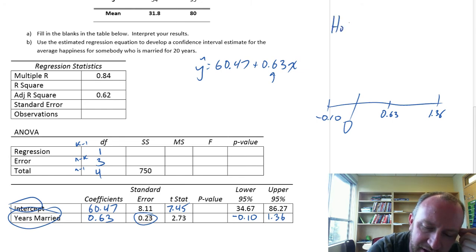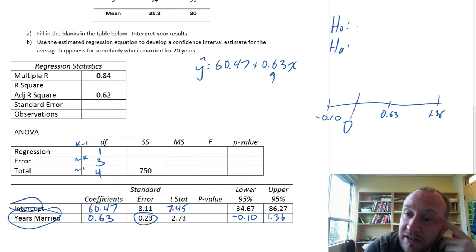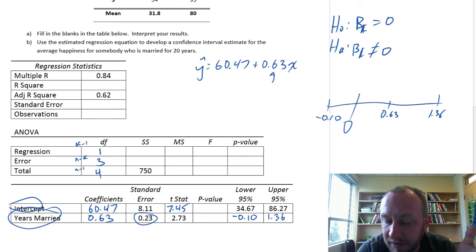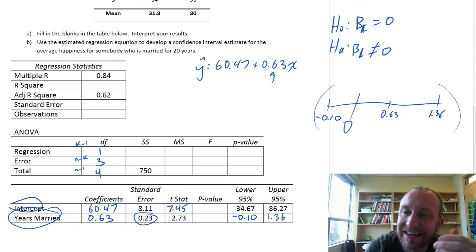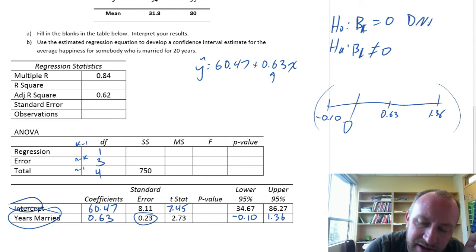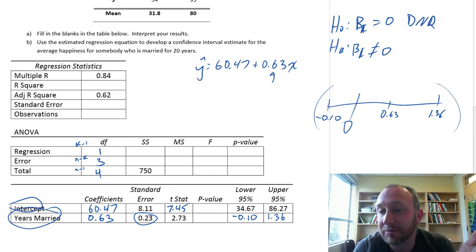So what does that mean for our hypothesis test? If we develop these tests for individual parameter significance: beta i is equal to 0, or it's not equal to 0. For our slope coefficient, so for beta 1, are we going to reject or not? Well, based on those interval estimate results, it does contain 0. So I already know we're going to be unable to reject that null hypothesis.